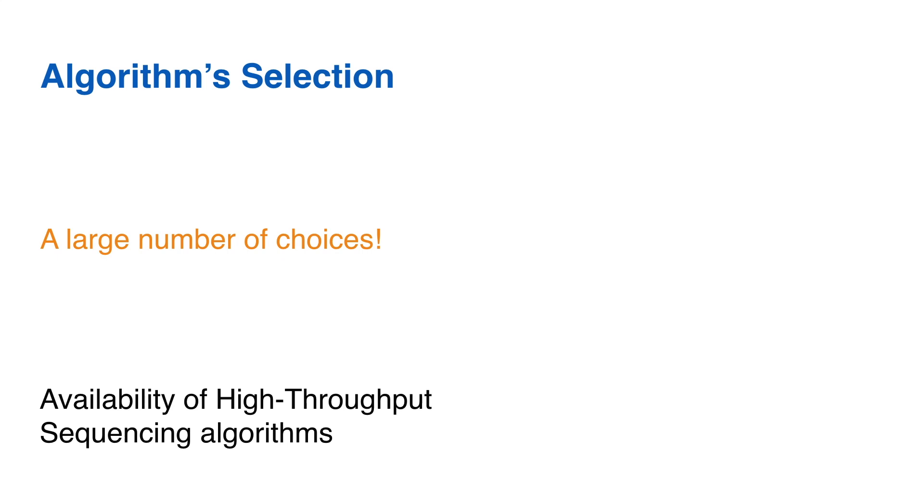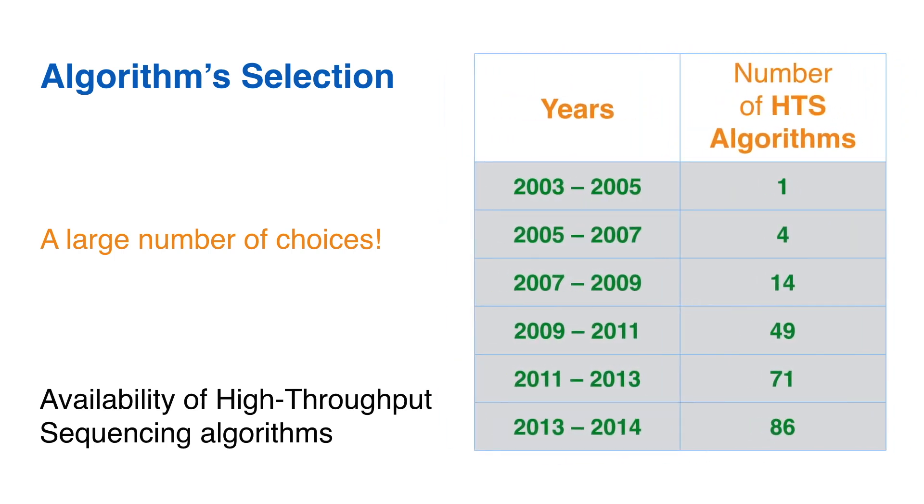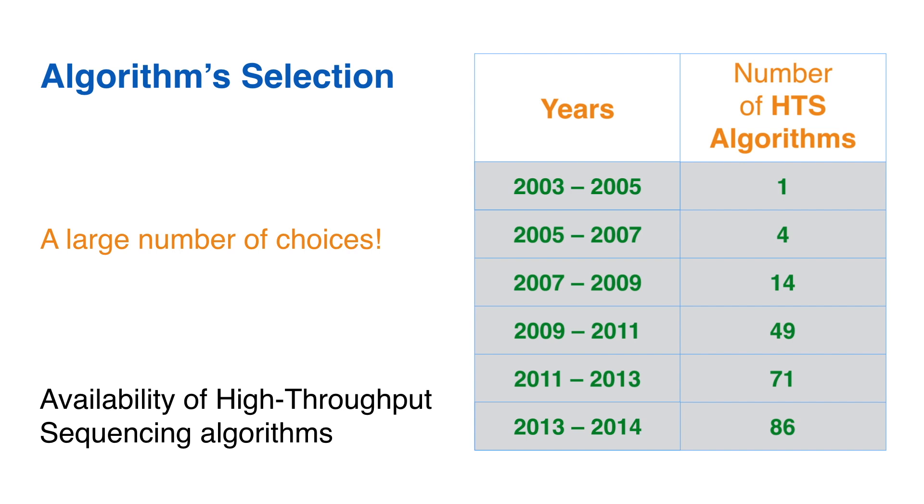Efforts to improve data processing methods creates an exponential growth in the numbers of algorithms. As an illustration of this diversity, the table shows an approximate count of different algorithms for genome assembly that have been produced between 2003 and 2014.